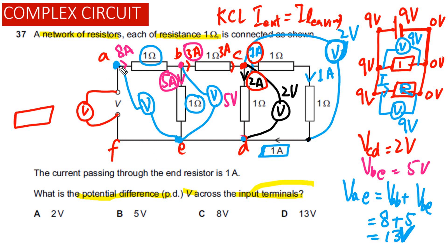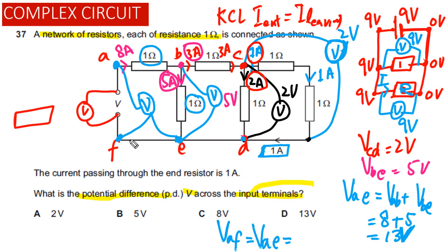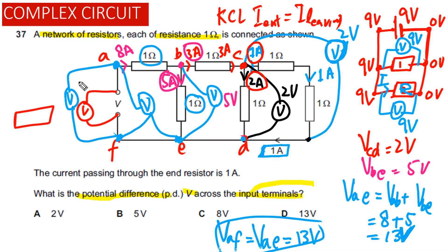Now if we connect the voltmeter across AF, the reading — the potential difference across AF — is again equal to 13 volts, because there is an ideal wire between E and F with no potential drop. And the potential difference across the input terminals is also equal to 13 volts. So our answer for this question is D.